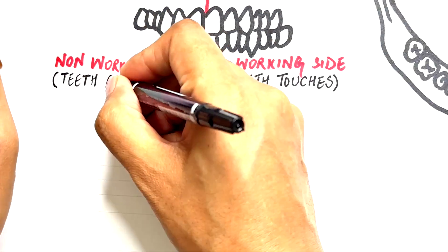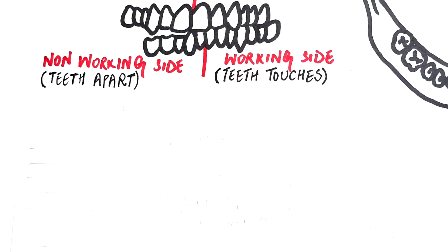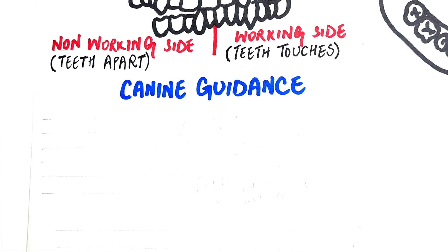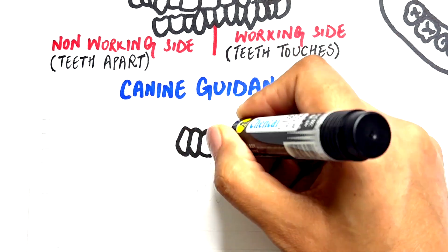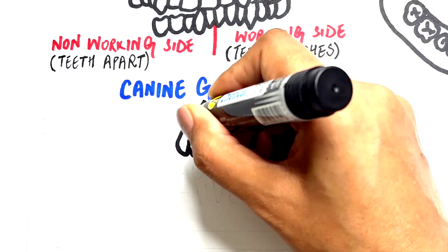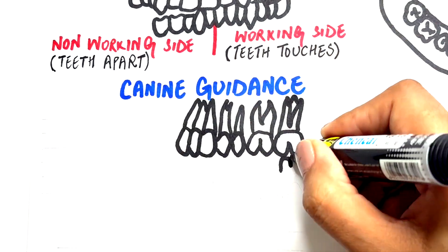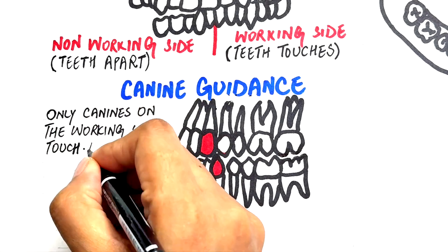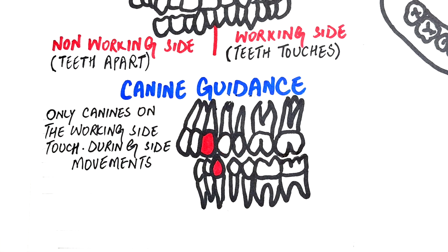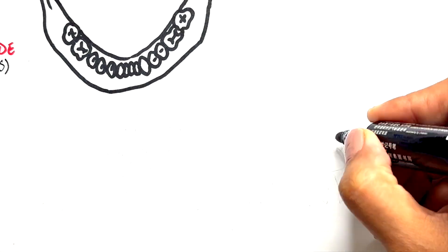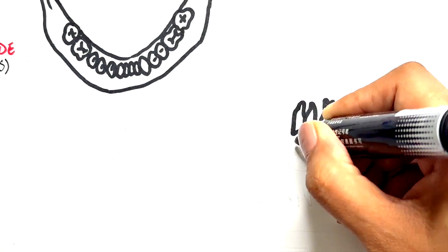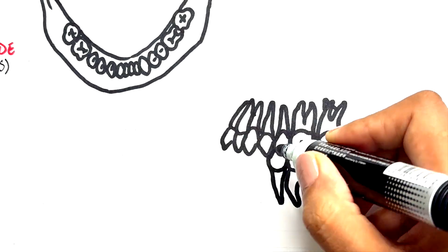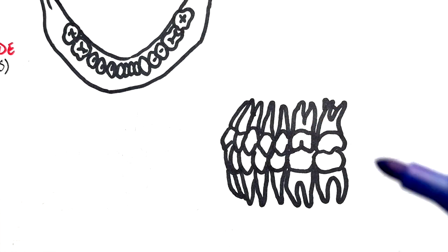Canine guidance occurs when only the canines on the working side touch during these side movements, thereby protecting the other teeth. But sometimes, instead of just the canines, a few teeth like premolars and molars join in — that's called group function.